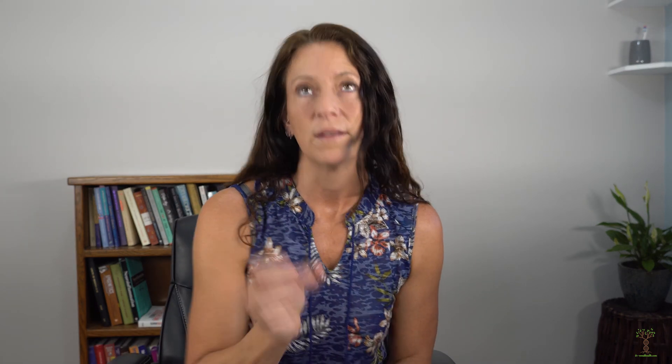Now we're going to talk about probability. Let's flip a coin. When you flip a coin, what's the probability that you'll get a head or a tail? It's 50-50 — you have two choices. If we flip the coin we have a 50% chance of getting a tail and a 50% chance of getting a head.